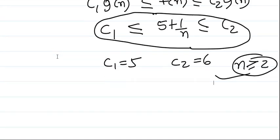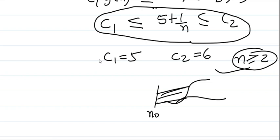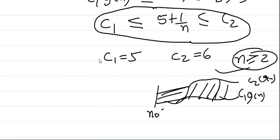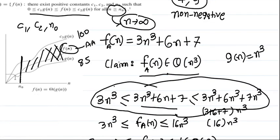Out of multiple possible values of n₀, you can choose any one. But once you choose a value of n₀, you must ensure that after that point this relation is true — that your function is always sandwiched between c1·g(n) and c2·g(n). Before n₀, anything can happen; for example, f(n) may be less than c1·g(n) before n₀, and that is allowed, as shown in the diagram.